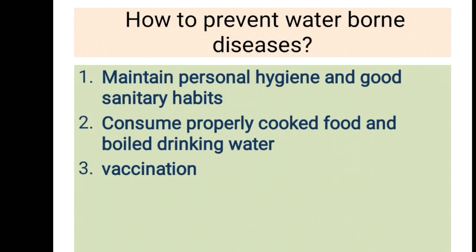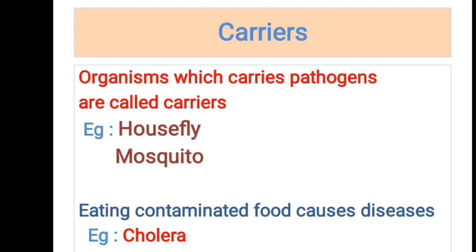To prevent waterborne diseases: first, maintain personal hygiene and good sanitary habits. Second, consume properly cooked food and boiled drinking water. Third, vaccination also helps to prevent waterborne diseases.